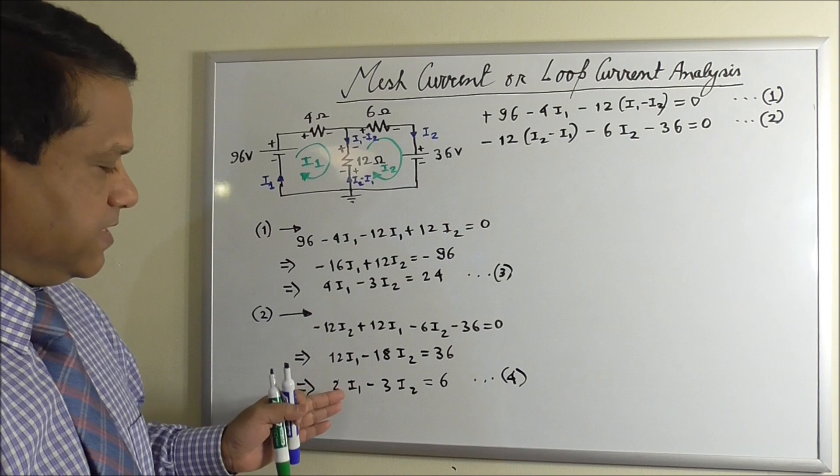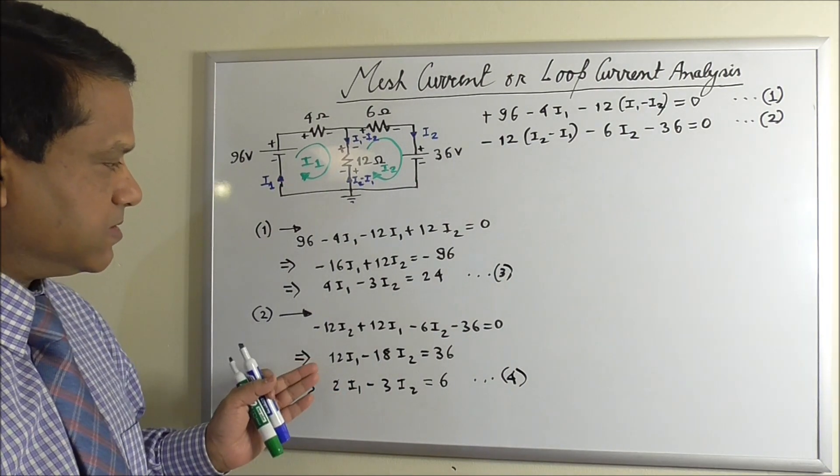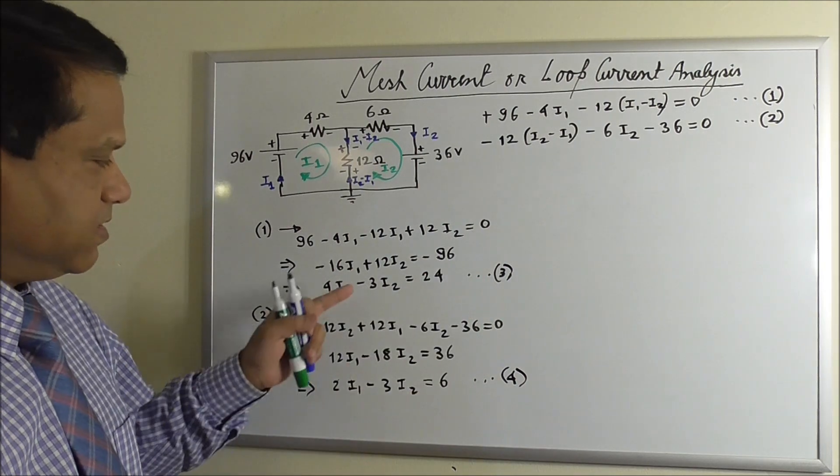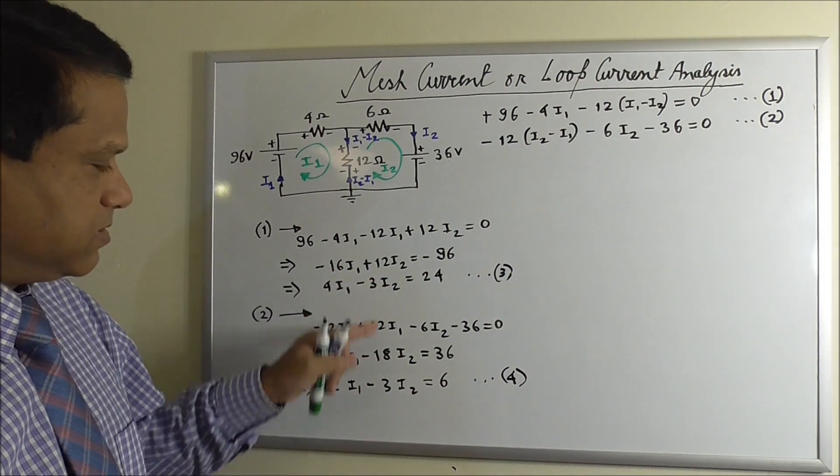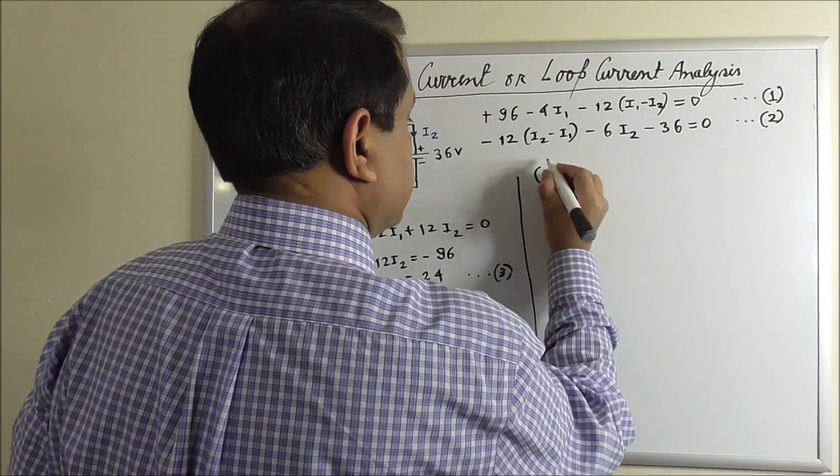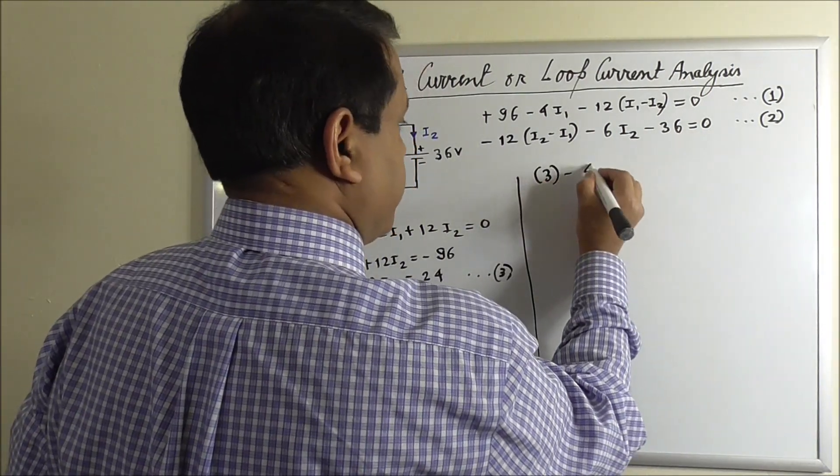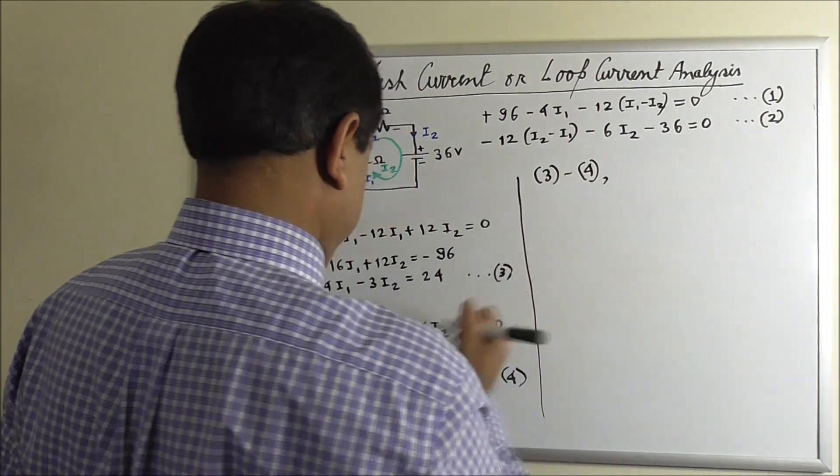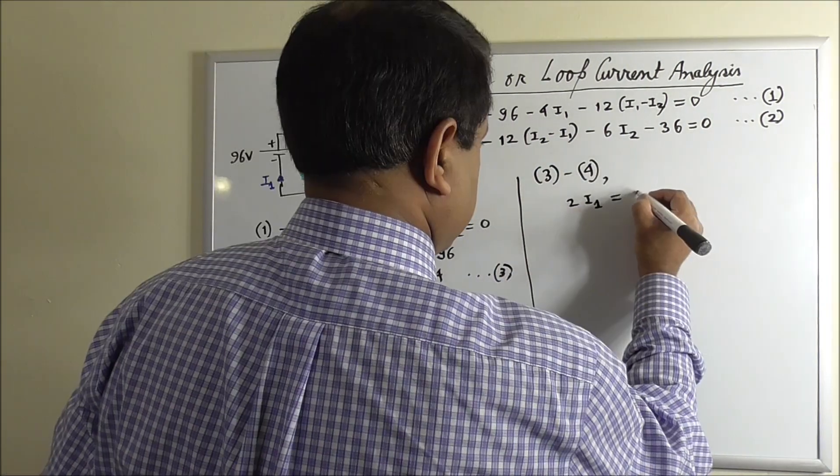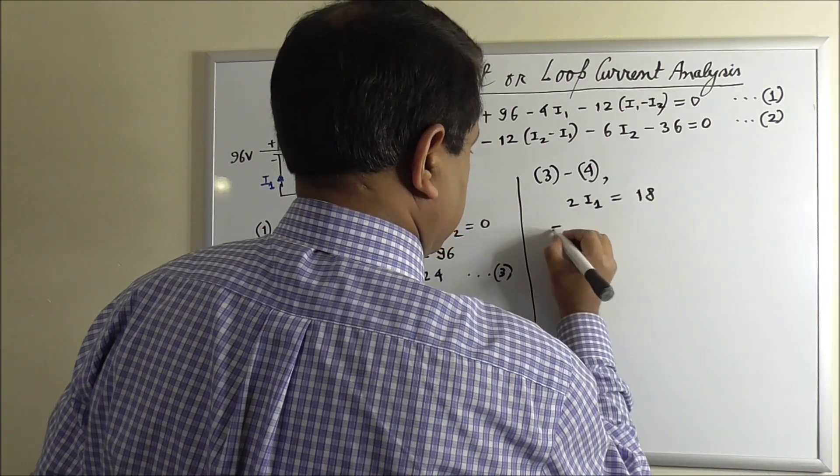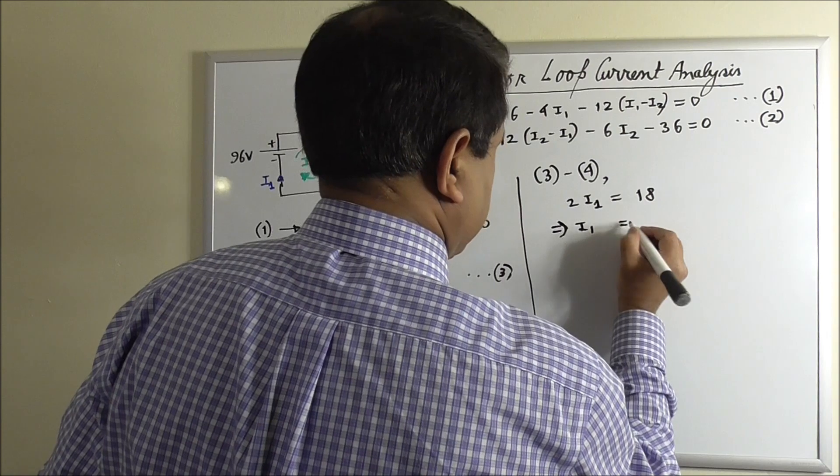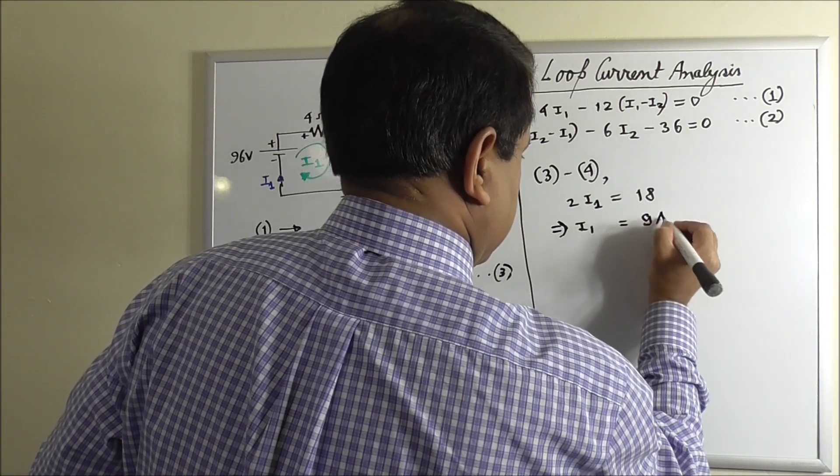By looking at these two equations, we see that if we subtract 4 from 3, this term will cross out. So we will solve for I1. For 2I1, equals 18, so I1 equals 9 ampere.